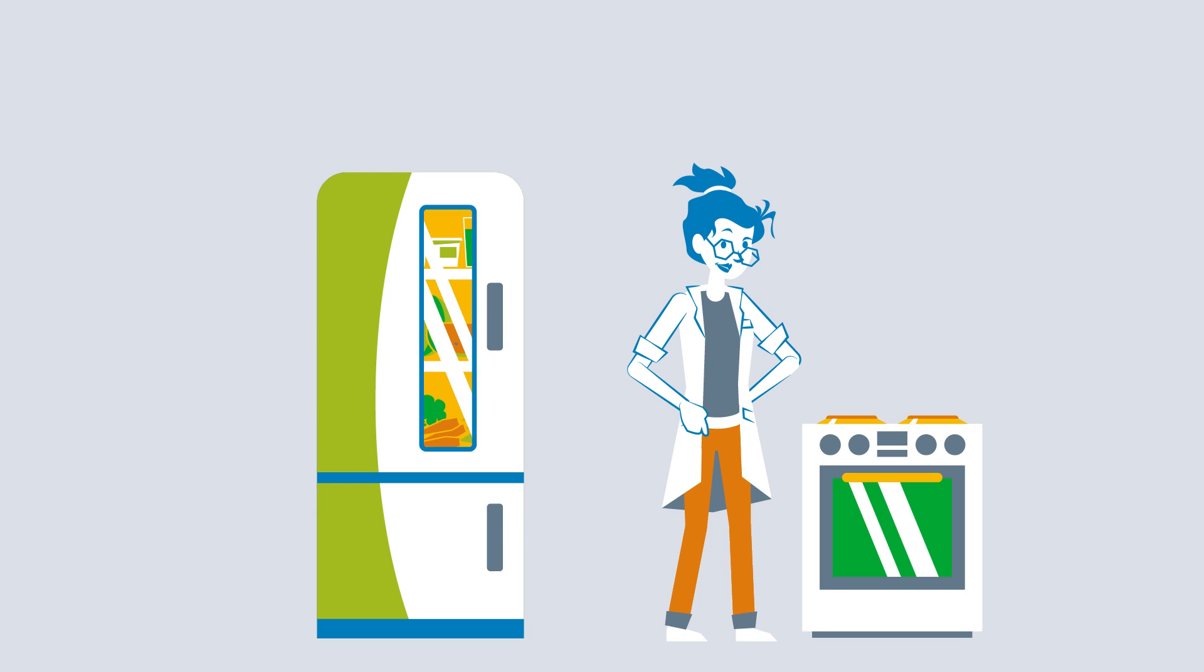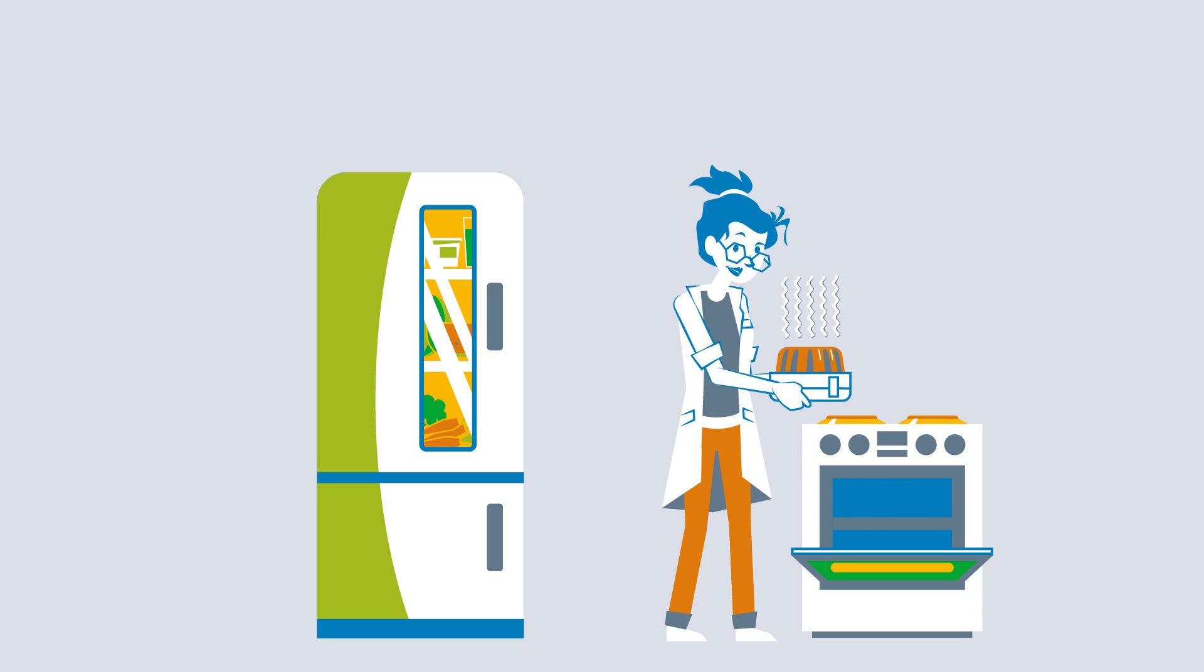Residential ventilation stops pollen and other particles from getting into the house. This saves up to 50% of heat energy. Enough energy to bake cakes, for example.